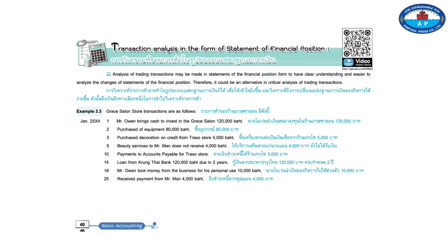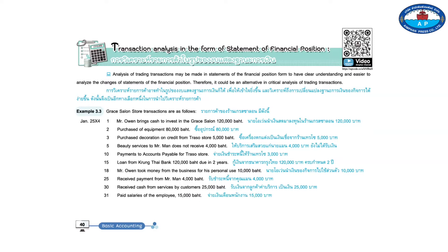Transaction 25: Receive payment from Mr. Man, 4,000 baht. Transaction 30: Receive money from services by customers, 25,000 baht. Transaction 31: Pay employee salaries, 15,000 baht. Command: Analysis of transactions in the form of statements of the financial position.